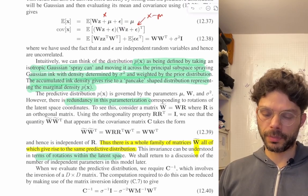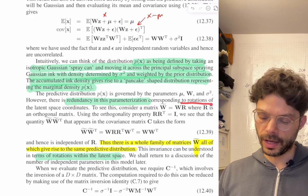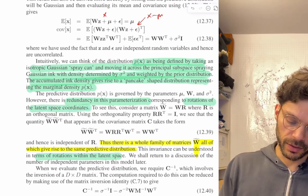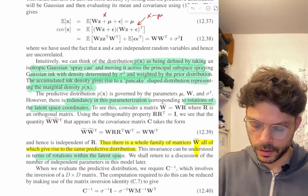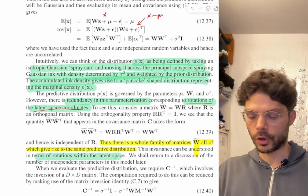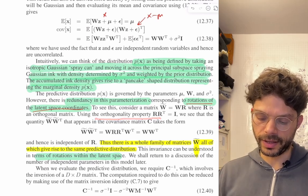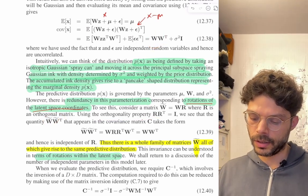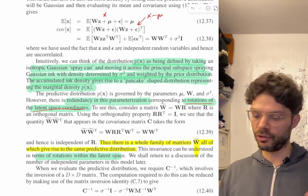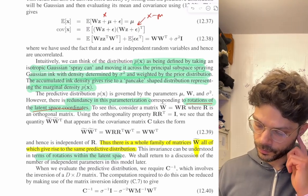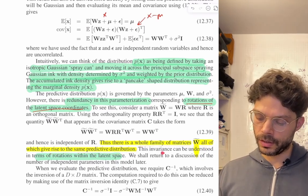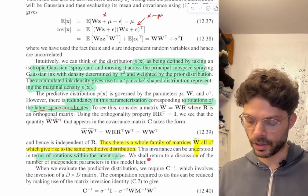There is redundancy in this parameterization corresponding to rotations of the latent space coordinates. Consider a matrix W-tilde which is W times some rotation matrix. Using the orthogonality property, W-tilde W-tilde^T equals WW^T, so it's the same as before — using a rotated version of latent variables gives the same distribution over observations. Thus there's a whole family of matrices all giving rise to the same predictive distribution. This invariance can be understood in terms of rotations within the latent space and will be discussed further later.